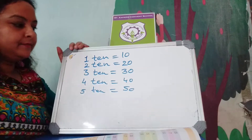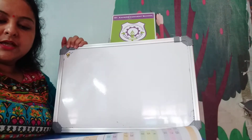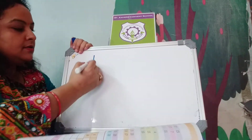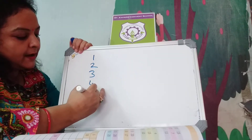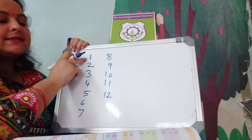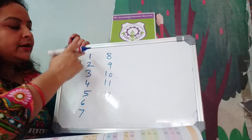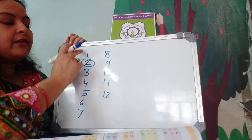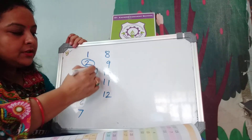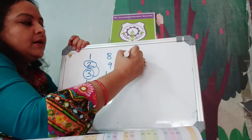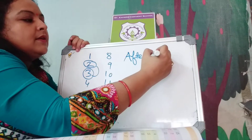On page number 72 — bigger number. What is a bigger number, children? The number which comes after. Suppose we are writing numbers sequentially: 1, 2, 3, 4, 5, 6, 7, 8, 9, 10, 11, 12. 2 comes after 1, so 2 is a bigger number than 1. 3 comes after 2, so 3 is bigger than 2. The number which comes after is the bigger number.